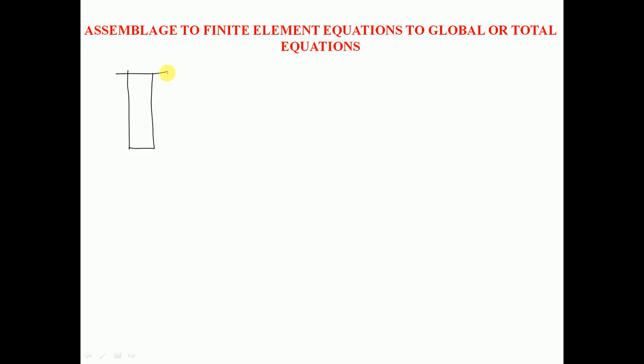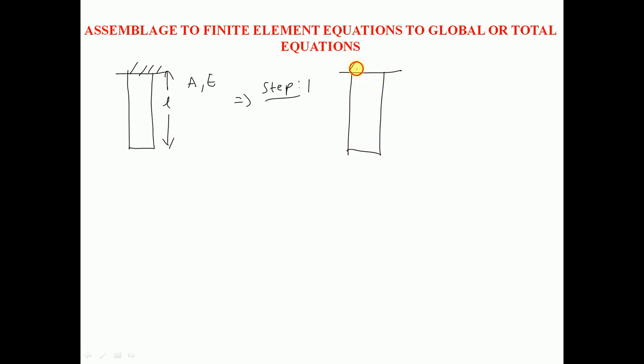Let me take a bar element having the length l, area of cross-section A, and Young's modulus E. The first step is to divide the bar into two equal parts.